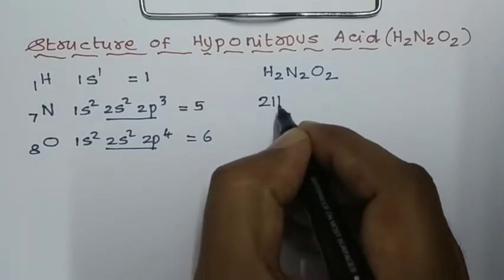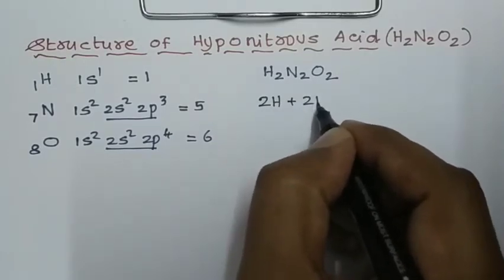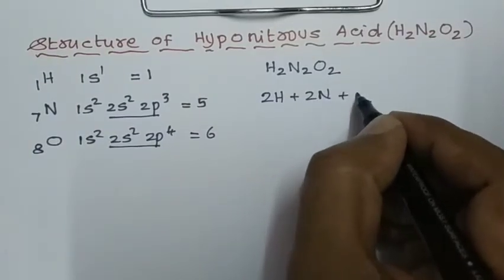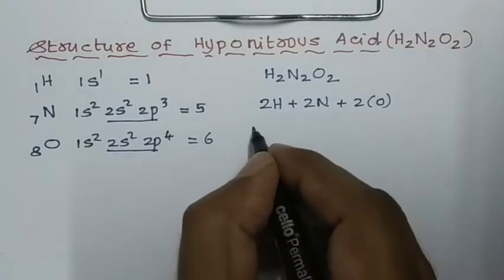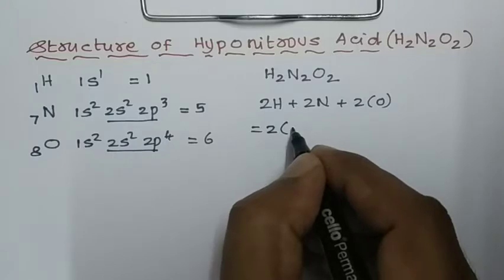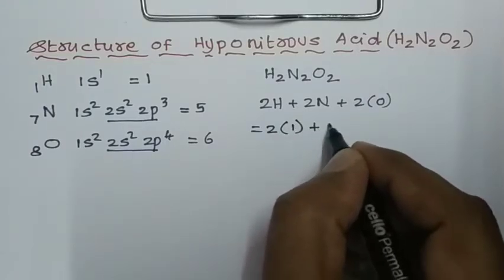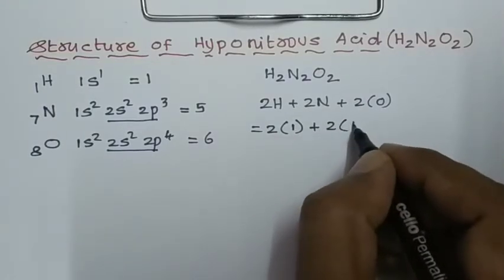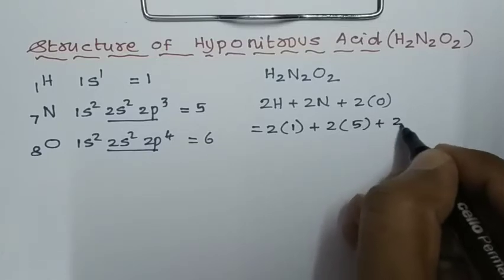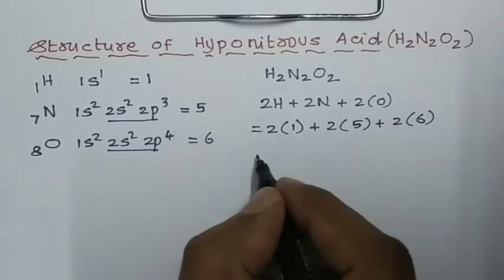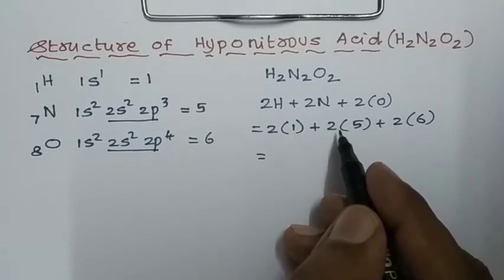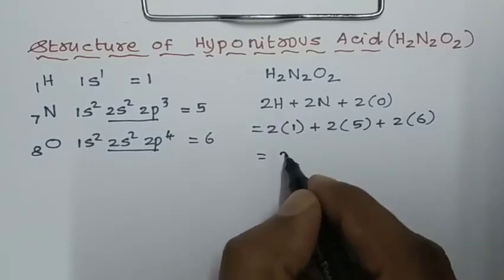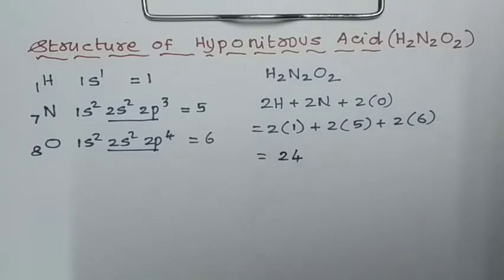The molecular formula for hyponitrous acid is H₂N₂O₂, containing 2 hydrogens, 2 nitrogens, and 2 oxygens. Total valence electrons: 2×1 (hydrogen) + 2×5 (nitrogen) + 2×6 (oxygen) = 2 + 10 + 12 = 24 total valence electrons.